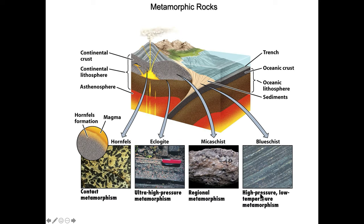When we get to metamorphic rocks, we have some additional things to consider. Starting out with continental crust, a subduction zone — as we saw in the igneous rock scenario — we have continental lithosphere below that and the asthenosphere below that. Remember, this is the weak layer where there's partial melting. So the result is a number of different kinds of metamorphic rock.